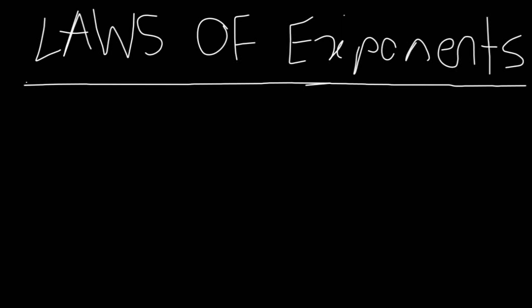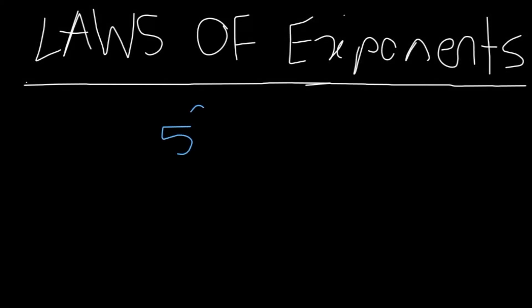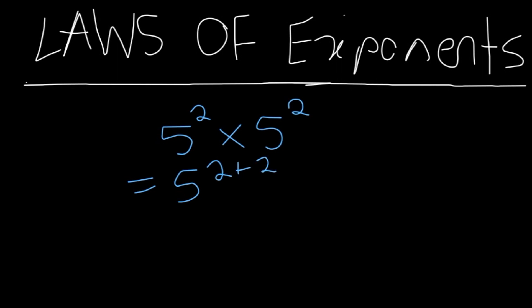Let's say I give you 5 to the power of 2 times 5 to the power of 2. How would you simplify that? Well, according to the laws of exponents, whenever you multiply the powers of the same base, you add the exponents. So the bases are the same — I'm just going to drop the base and add up the exponents: 5 to the power of 2 plus 2, giving a final answer of 5 to the power of 4.